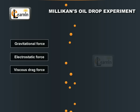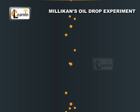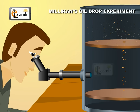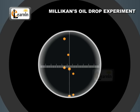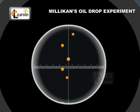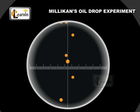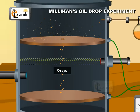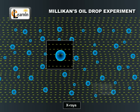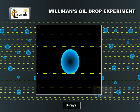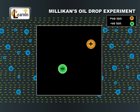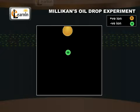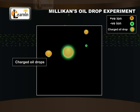The rate at which these drops fall was measured by observing them through a micrometer eyepiece of a telescope. X-rays were passed through the chamber to ionize the air inside. On colliding with gaseous ions, these oil droplets acquire charge.